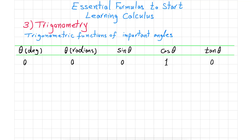The second important angle is 30 degrees, which is equivalent to π/6 in radians. Sine of 30 degrees is 1/2, cosine of 30 degrees is √3/2, and tangent of 30 degrees is √3/3.